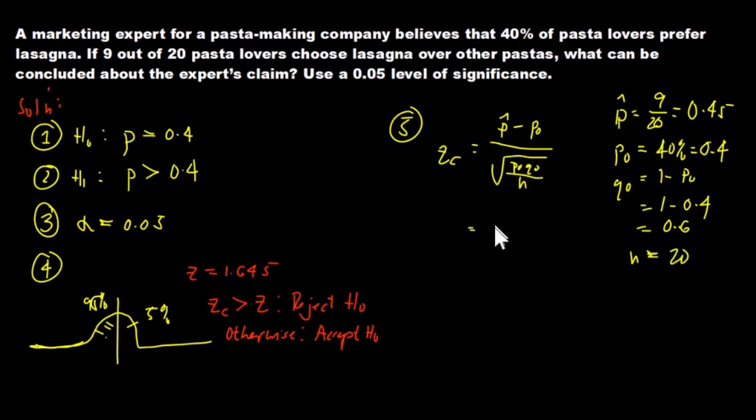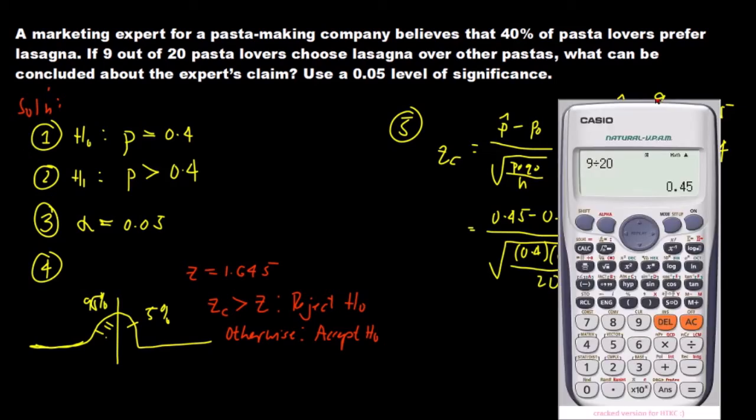We will substitute now. This will be 0.45 minus 0.4 all over the square root of 0.4 times 0.6 all over 20. We will now calculate. We have 0.45 minus 0.4 over square root of 0.4 times 0.6 all over 20.